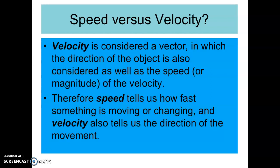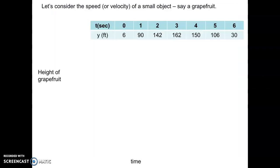A positive velocity may move in whatever a positive direction is considered in the problem, and a negative velocity may indicate a downward or negative direction, depending on the problem. So let's consider the speed or velocity of an object — let's say a grapefruit.